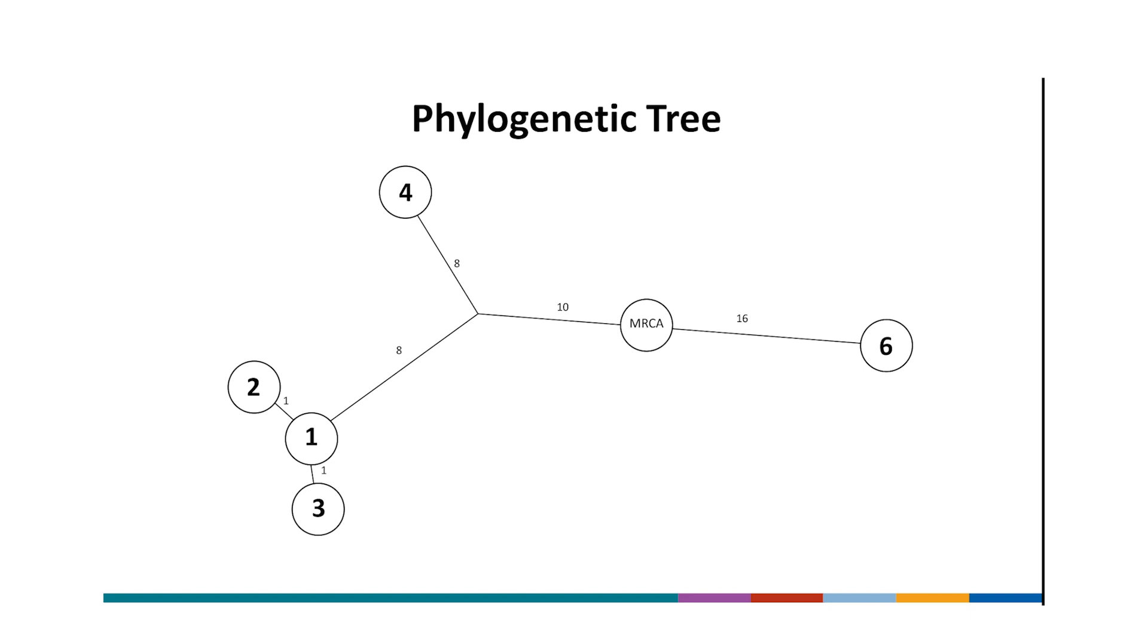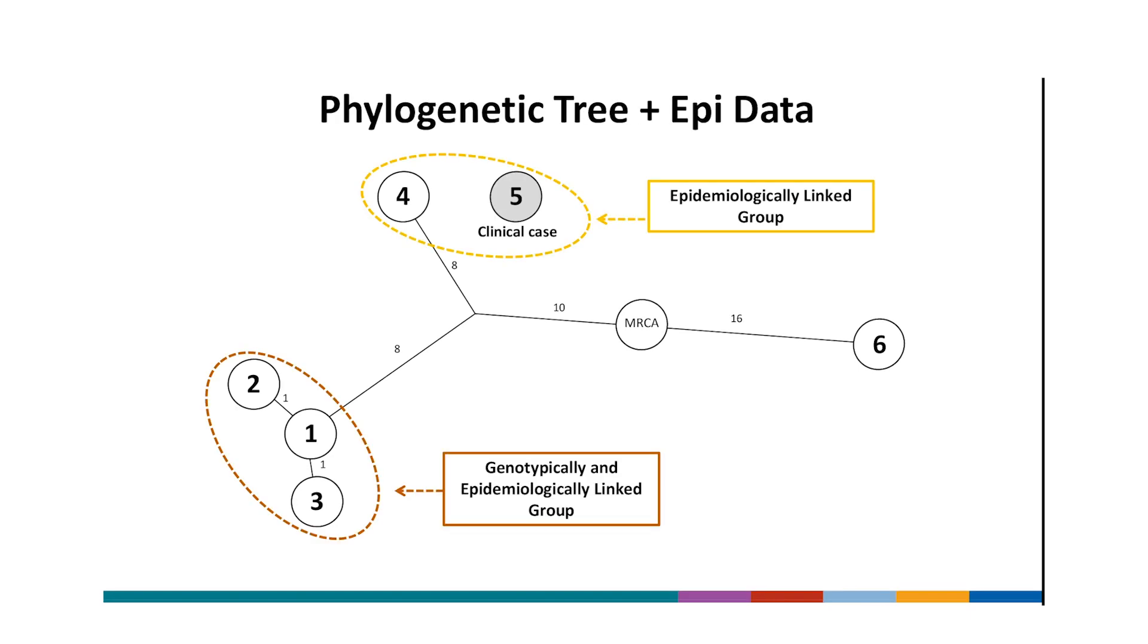You can see that the TB isolates from patients 1, 2, and 3 are genetically closely related and are separated by only 1 to 2 SNPs. The isolates from patients 4 and 6 are genetically distant from each other. They're separated by a total of 34 SNPs. The isolates from patients 4 and 6 are also genetically distant from the isolates of patients 1, 2, and 3.